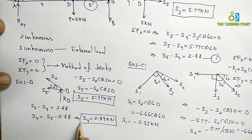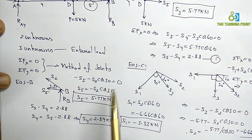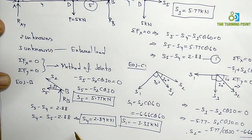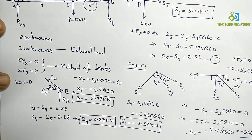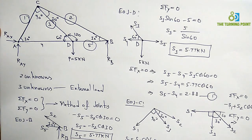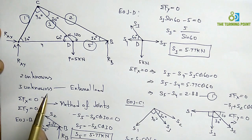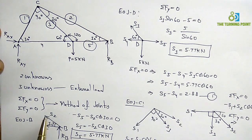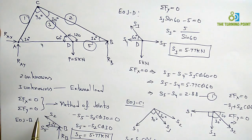All axial forces have now been calculated using the method of joints: S1 = −3.33 kN, S2 = −6.66 kN, S3 = 5.77 kN, S4 = 2.89 kN, S5 = 5.77 kN. The key procedure is to always start with a joint having 2 unknowns. If not possible, choose a joint with 3 unknowns that has an external force enabling at least one value to be found, or evaluate support reactions first.